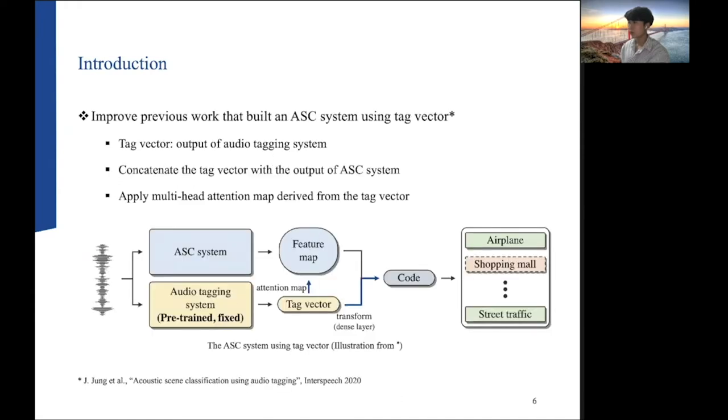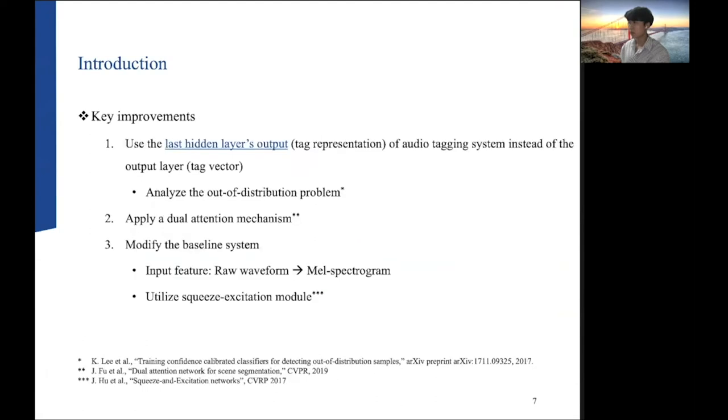In our previous work, we improved the performance of the ASC system by using tag vector. Here, the tag vector means the output of the audio tagging system. This tag vector is concatenated to the feature map of the ASC system, and the final code is generated by applying the multi-head attention map derived from the tag vector.